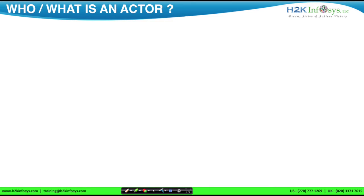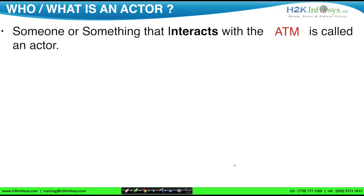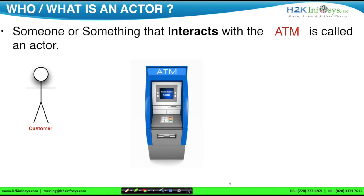Now that we have an idea about system and interaction, let's move on to the main topic: actors. Based on ATM as a system, the definition goes: someone or something that interacts with the ATM is called an actor. Can you think of a possible actor for an ATM? How about a customer? The answer is yes — there is interaction. The customer inserts a card; in response, the ATM asks for the pin. This single set of interaction is good enough to prove that there is interaction between the ATM and the customer. So we can conclude that customer is an actor.